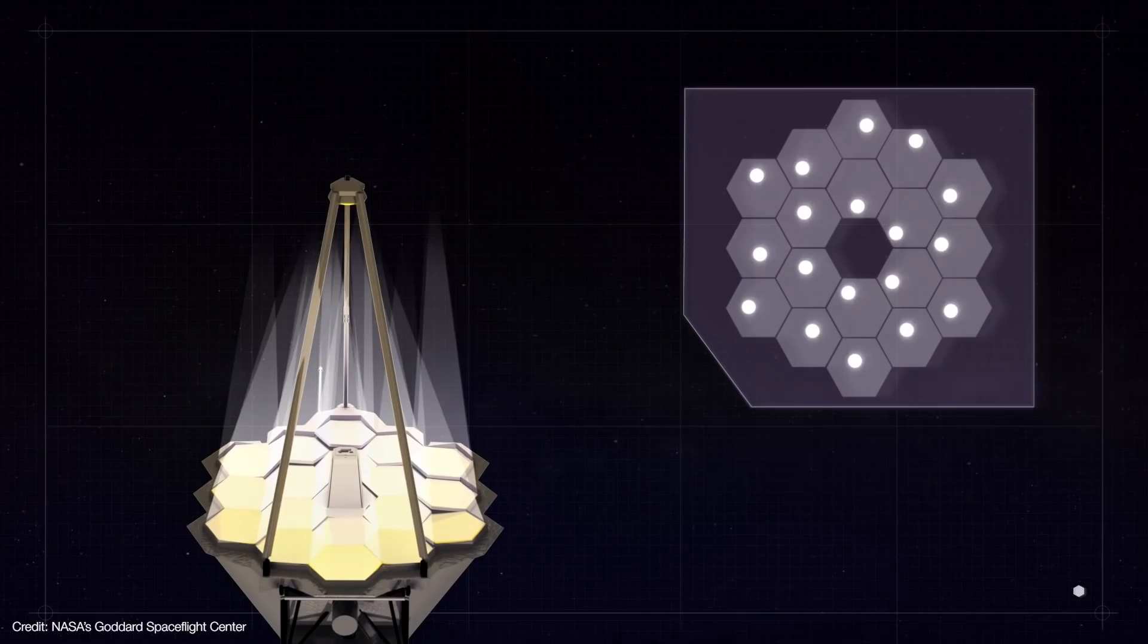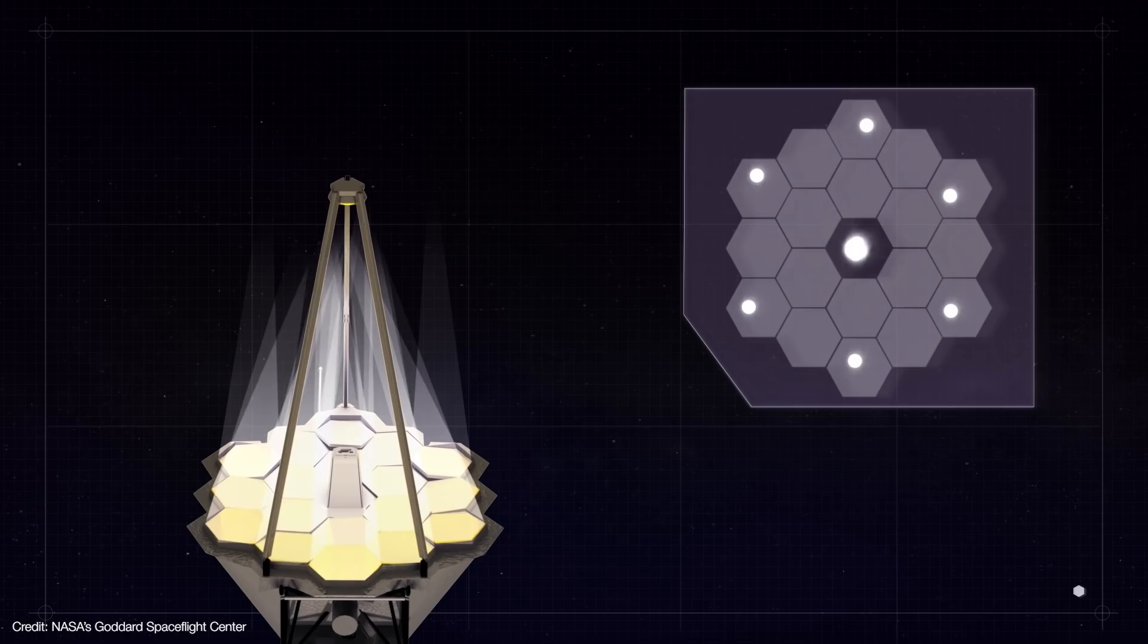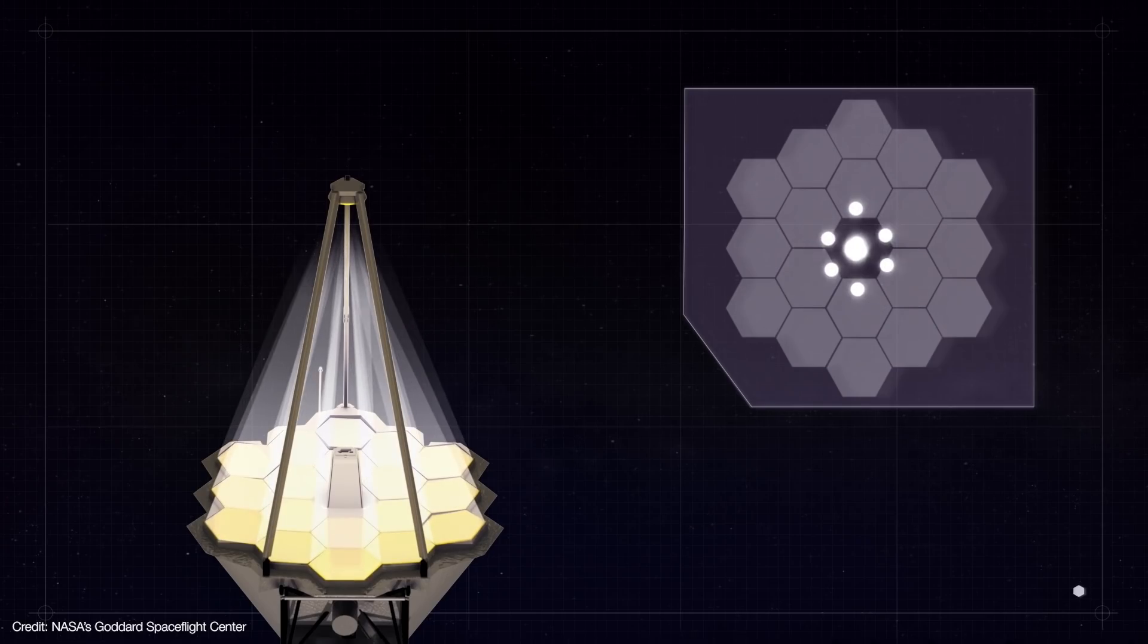At least, that's how it's supposed to work. But we're not there yet. Webb's mirrors must operate at temperatures as cold as 35 Kelvin, and all 18 of the primary mirror segments must be aligned to within 10 nanometers of each other. But even this quick look at Webb's optical system raises some questions.